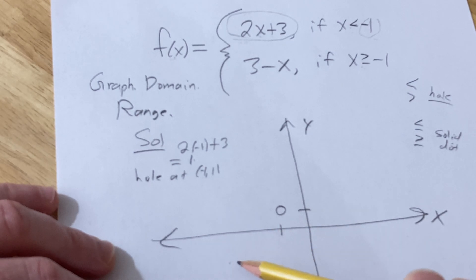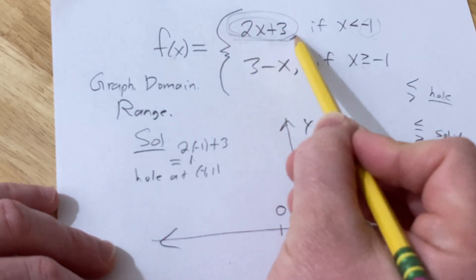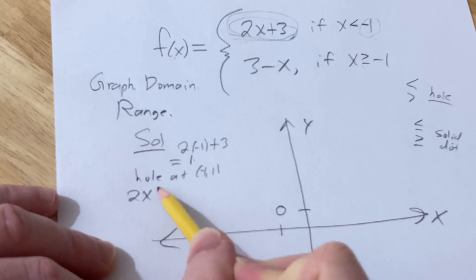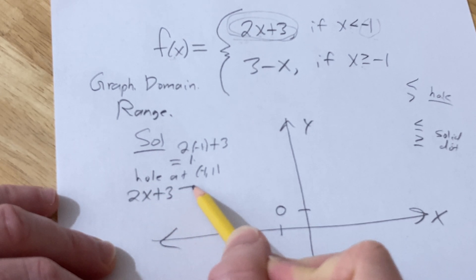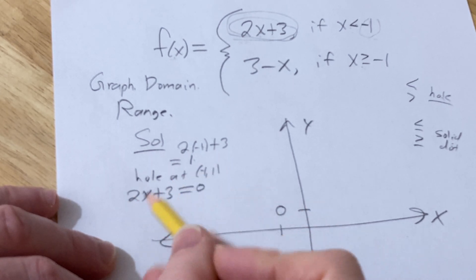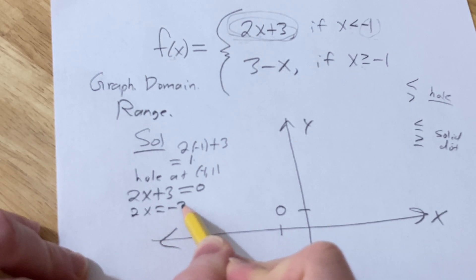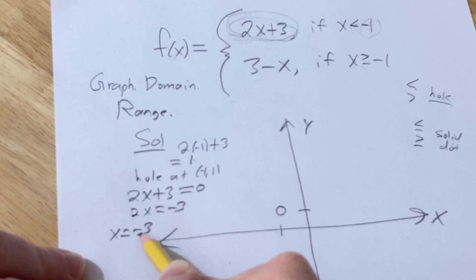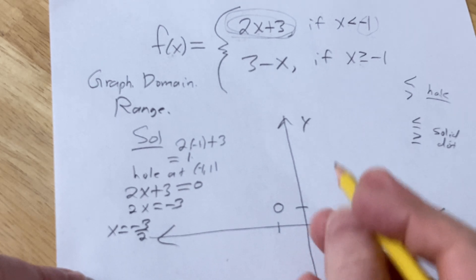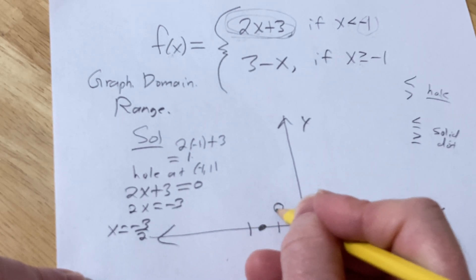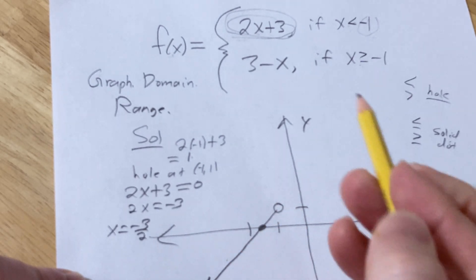So in order to find the x-intercept of the line, we can set this piece equal to 0, right? Because this is the y-value. To find the x-intercept, you set y equal to 0, going pretty quick here. That's negative 1.5, boom. So that's this one here.